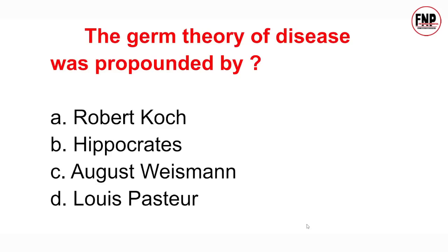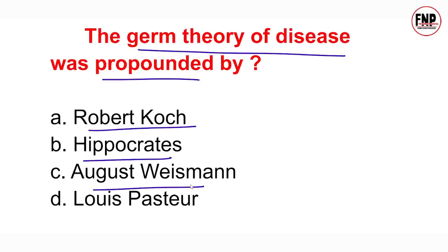Next question: The germ theory of disease was proposed by — Robert Koch, Hippocrates, August Weismann, or Louis Pasteur? Option D is correct — Louis Pasteur ne germ theory of disease diya tha. Is theory mein unhone bataya tha ki bahut saari disease conditions ke hone ke liye microorganisms responsible hote hain — yaani aankhon se na dikhne wale chote chote organisms, microorganisms, disease cause kar sakte hain.